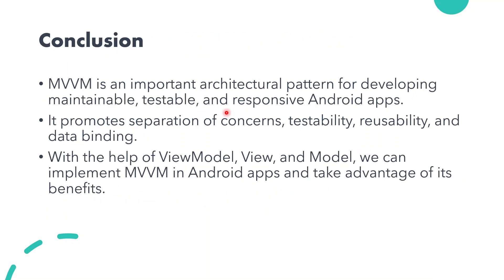In conclusion, MVVM is an important architecture pattern for developing maintainable, sustainable, and responsive Android applications. It promotes separation of concerns, testability, reusability, and data binding. With the help of the ViewModel, View, and Model, we can implement MVVM in Android and take advantage of its benefits. For better understanding, practice coding with the MVVM architecture pattern. Thank you and have a nice day.